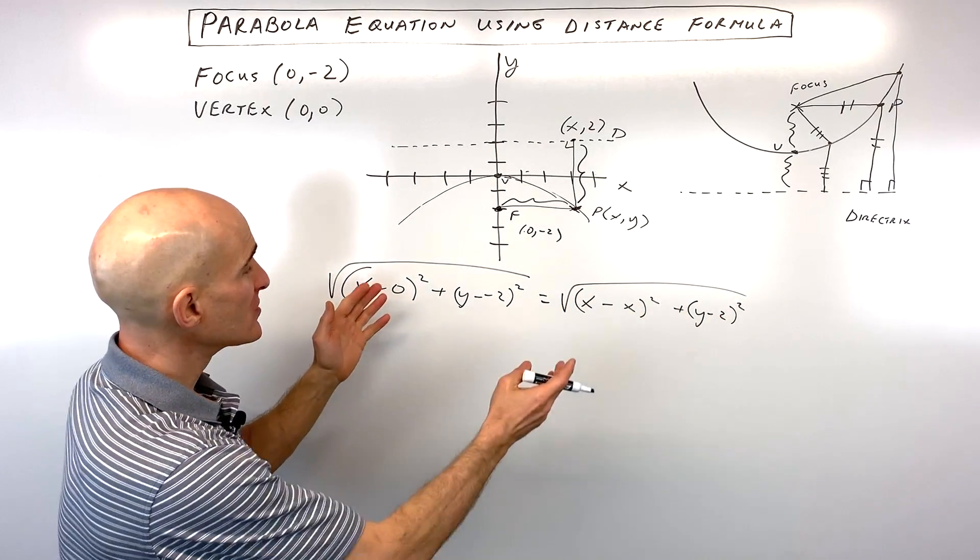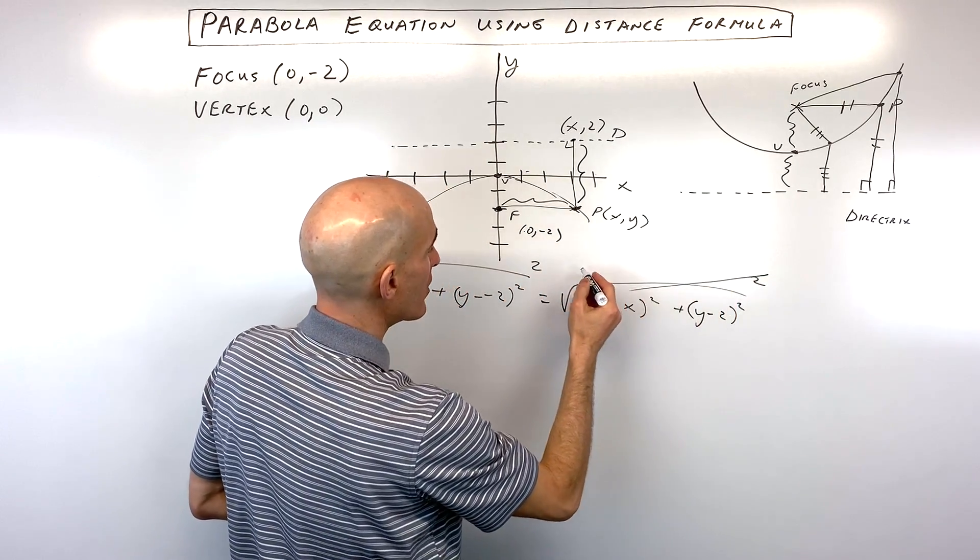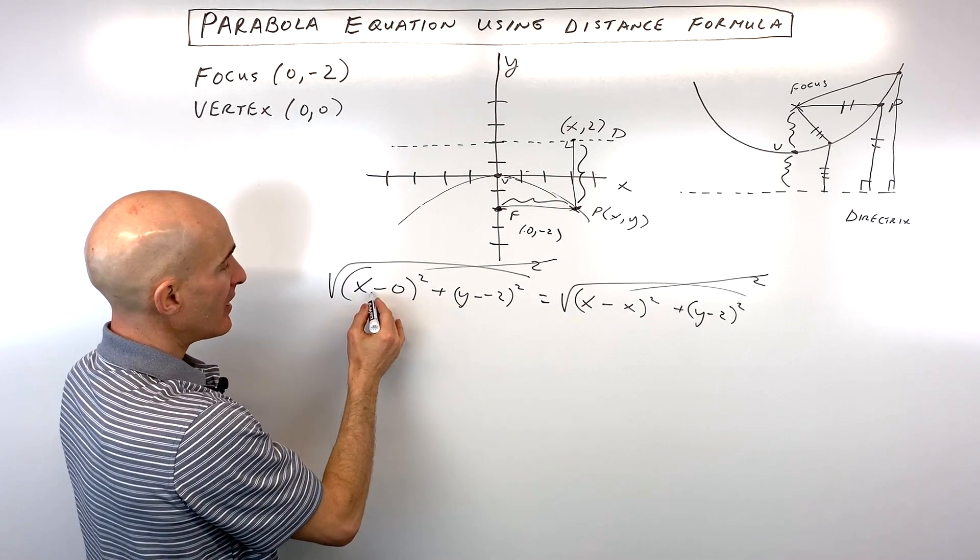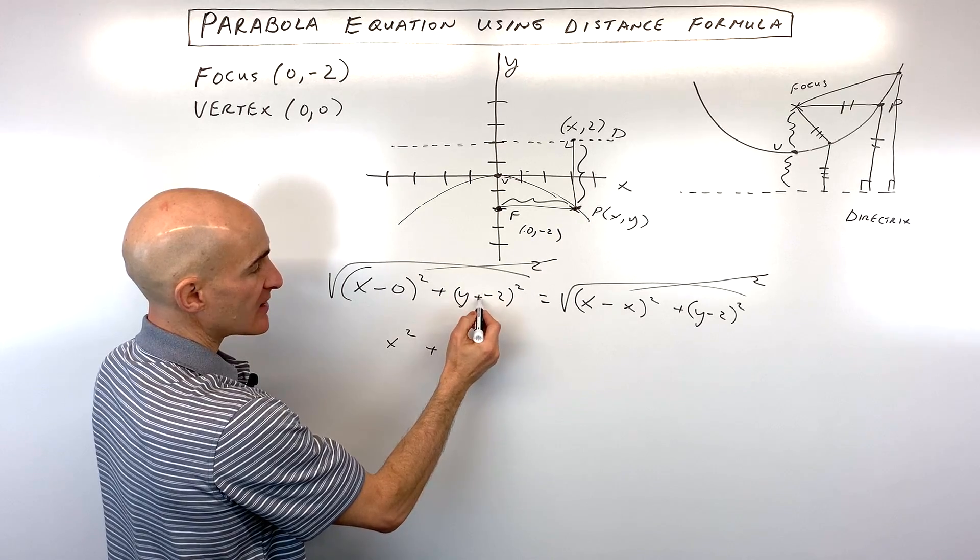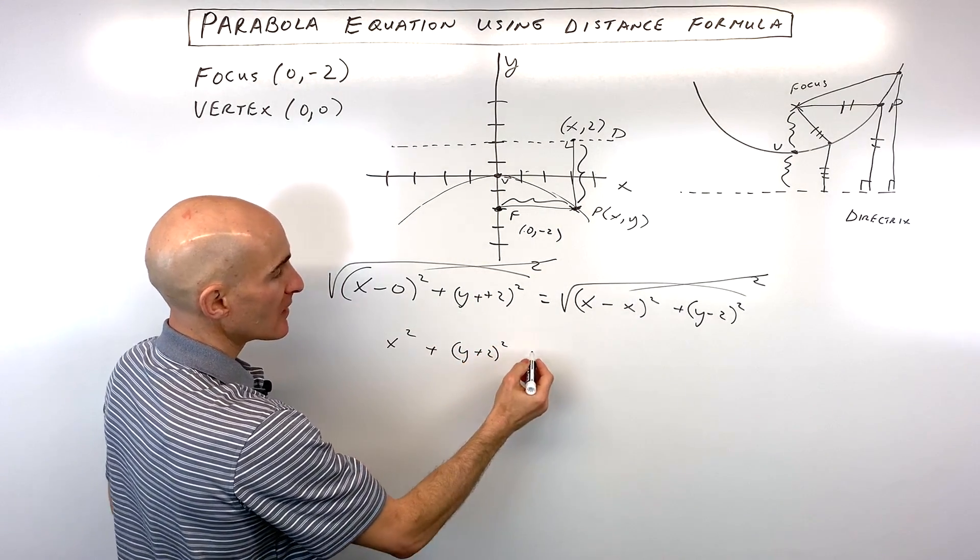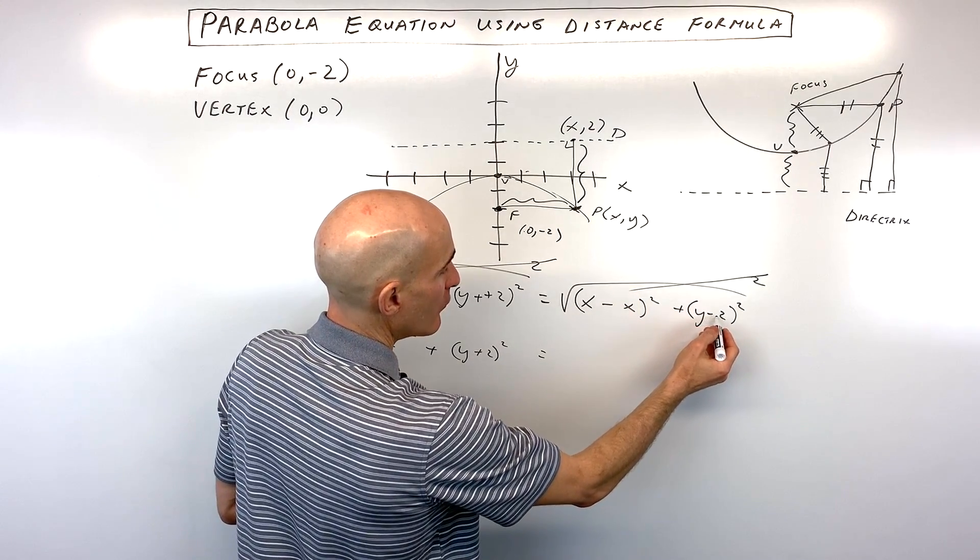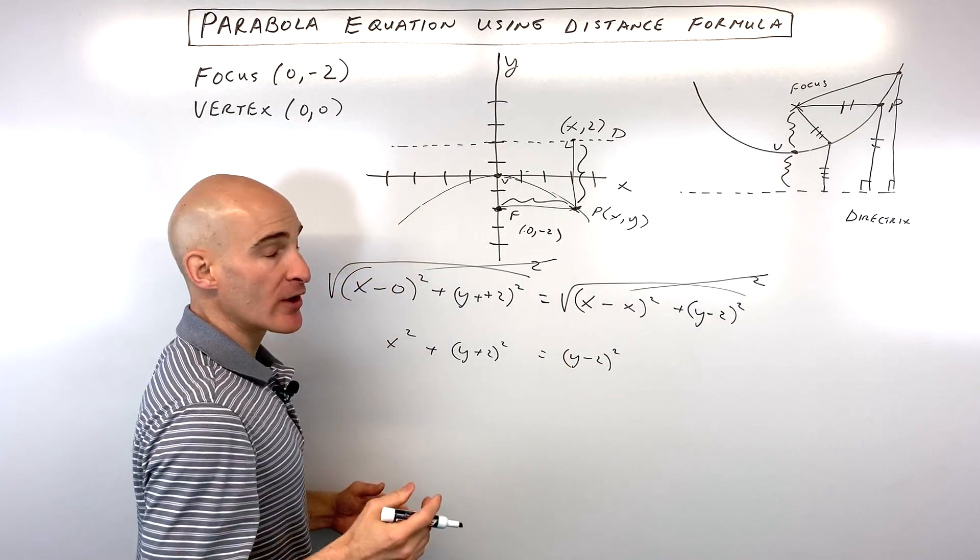Now all we have to do is square both sides of this equation. So the square and the square root, those cancel one another out. Here we have x - 0, which is just x. So we have x². Here we have, when you subtract it, it's like adding the opposite. So that's going to be (y + 2)². x - x here is 0, squared is just 0. And then we have (y - 2)².